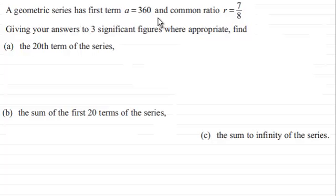The series has first term a equals 360 and a common ratio r which equals 7/8. Given your answer to three significant figures where appropriate, find the 20th term of this series. Now I'm assuming that you're familiar with the geometric series. If not, you can always check out more tutorials on my website examsolutions.net.